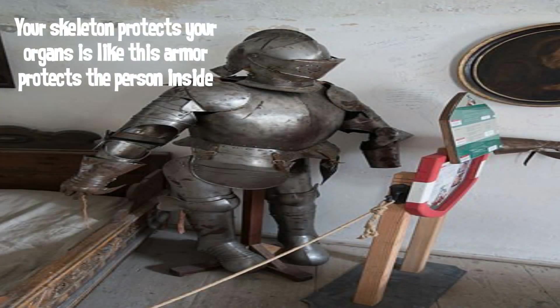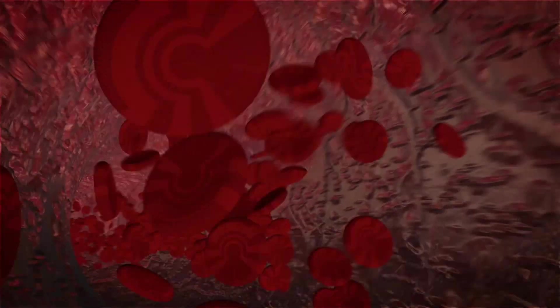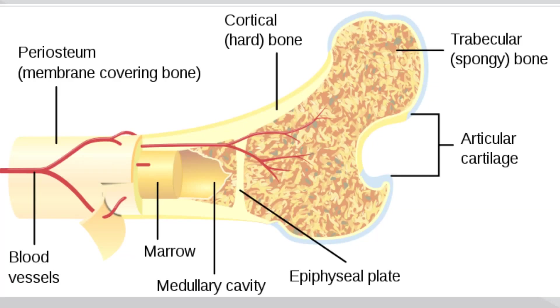Protect internal organs: bones also protect internal organs from injuries by covering or surrounding them. For example, your ribs protect your lungs and heart. Produce blood cells: the softer connective tissue that fills the interior of the bone is referred to as bone marrow. Red marrow is where the production of blood cells takes place.